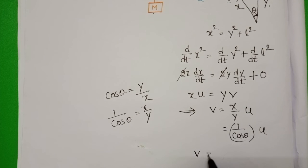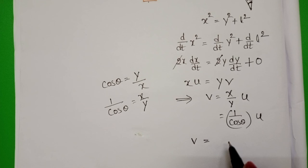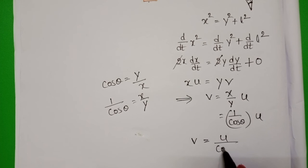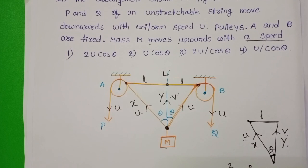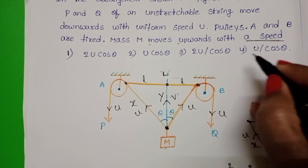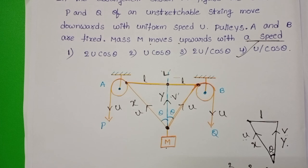So speed of the mass in upward direction is V equals U by cos theta. Check the given options. Fourth option is correct. U by cos theta.